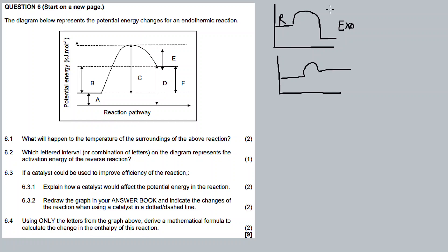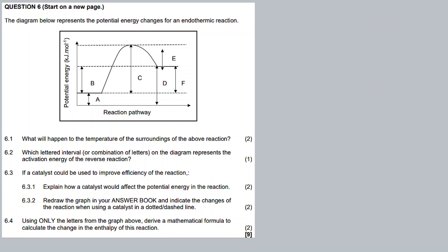For the exothermic reaction, reactants have higher amounts of energy than the products. For the endothermic reaction, the reactants have less energy compared to the products. So the exothermic reaction is giving off energy, while the endothermic reaction is taking in energy.